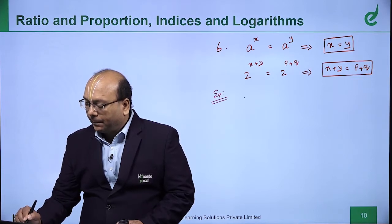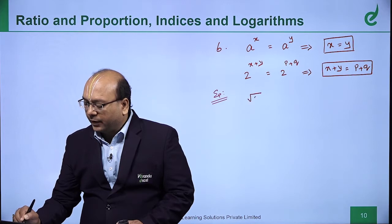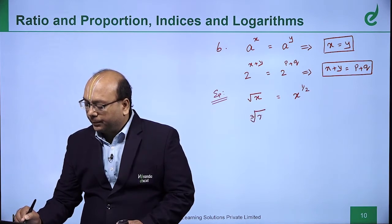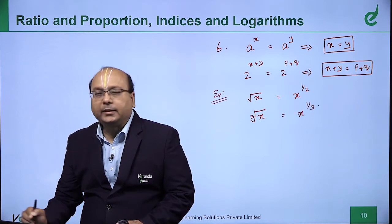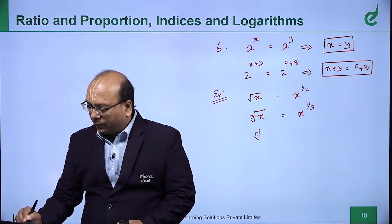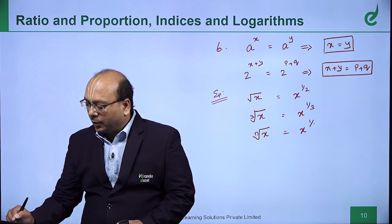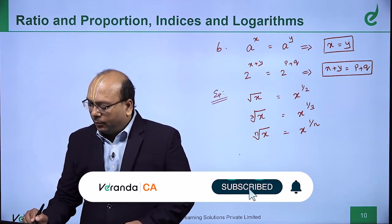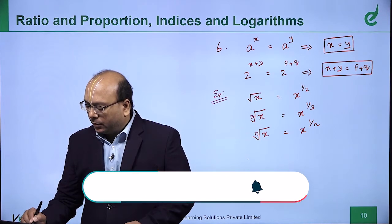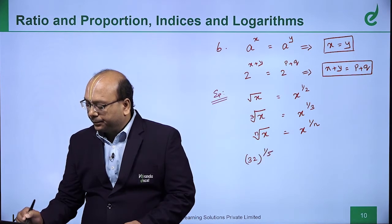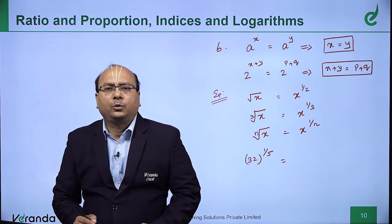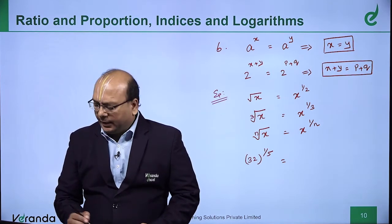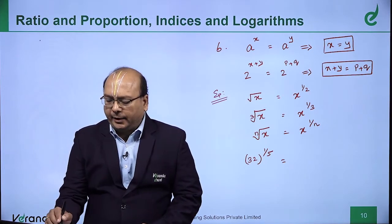The square root of x is x^(1/2), the cube root of x is x^(1/3), and the nth root of x is x^(1/n). For example, 32^(1/5) means the fifth root of 32. First, ignore the power and look at the base number 32.